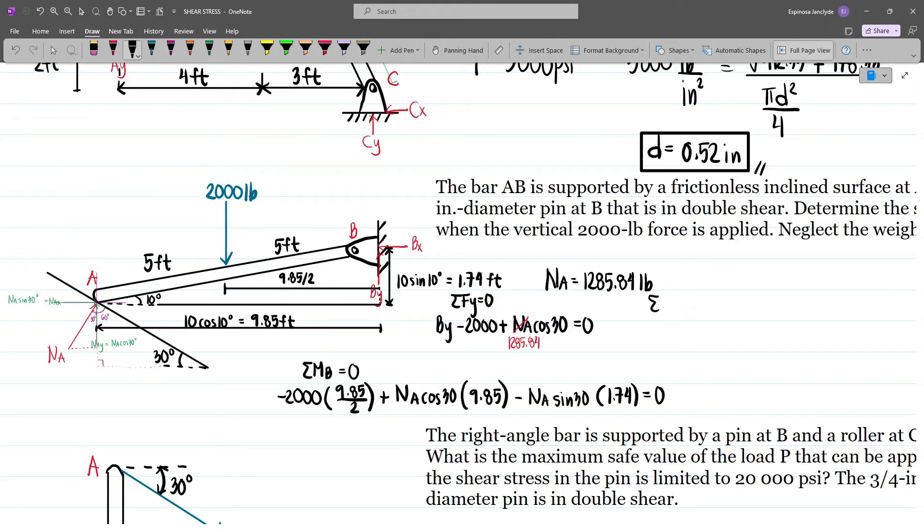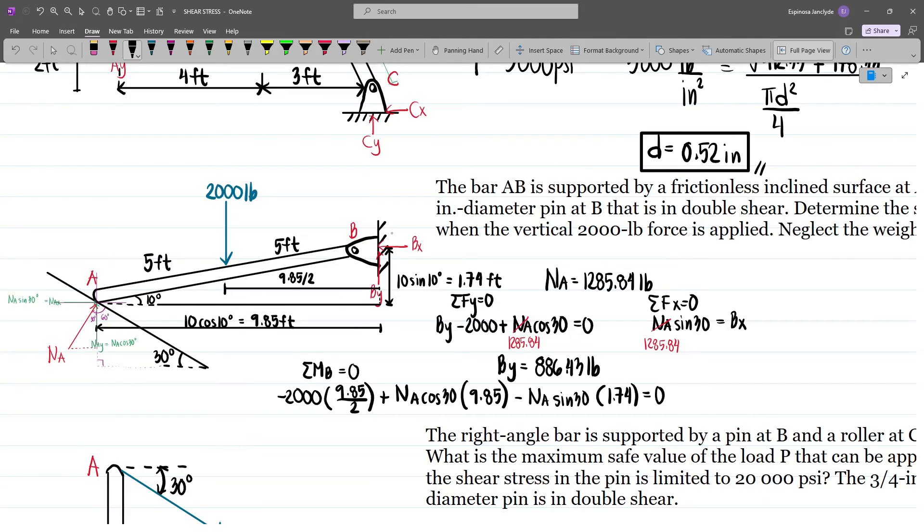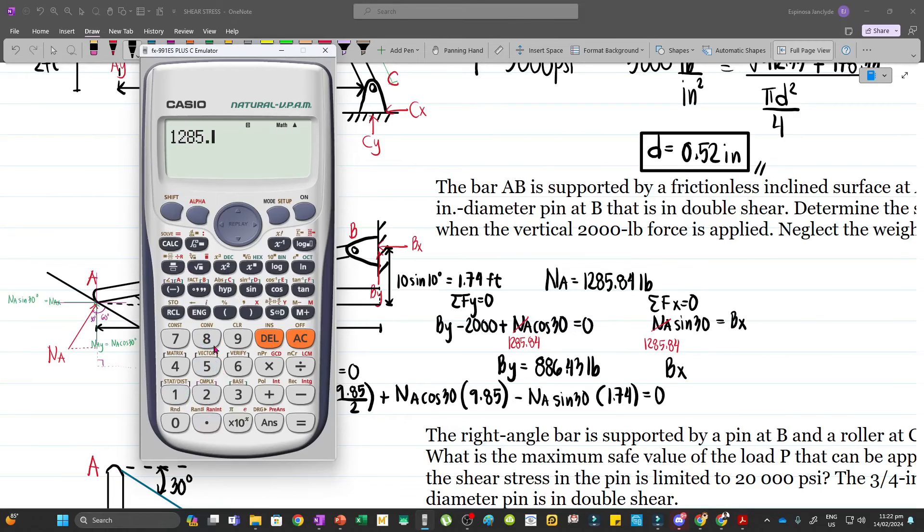And then summing up forces horizontal, we have NaX or Na sin 30 is equal to Bx. And this is also 1285.84. And so our By will be 2000 minus 1285.84 cos 30 which is 886.43. And then our Bx is 1285.84 sin 30, so that'll be 642.92.